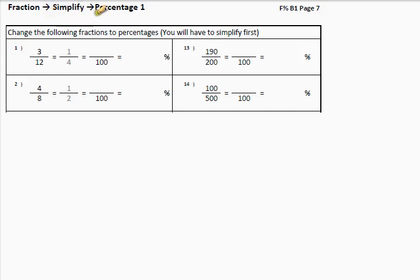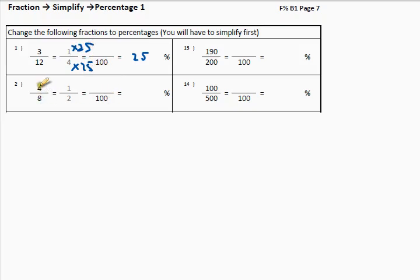Now, there is a little golden rule we can follow: fraction, simplify, then percentage. If we have a fraction where the bottom number is not one of those you can multiply by a whole number to get a hundred, you have to simplify first. If we look at three twelfths, you can see that simplifies to one quarter — and hopefully you immediately know that's twenty-five percent. Four eighths is a half, so it is fifty percent — fifty over a hundred.